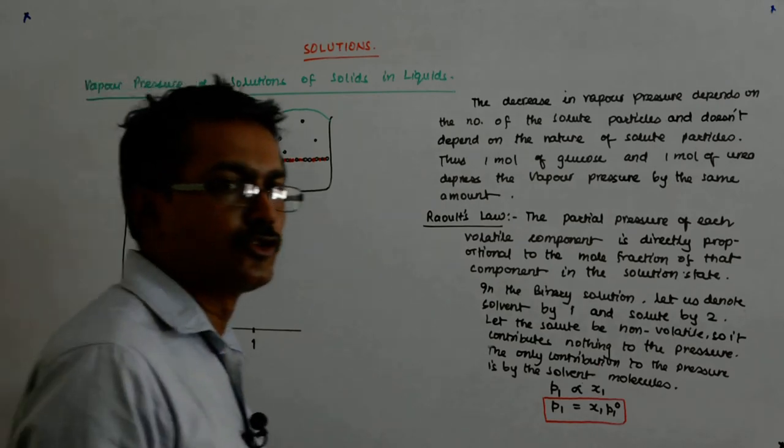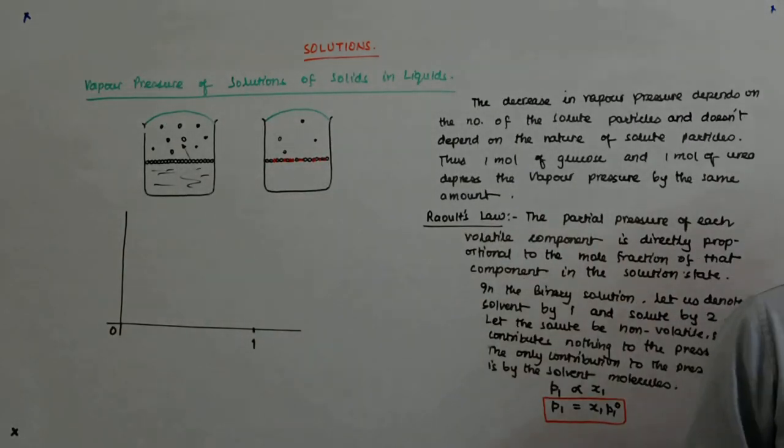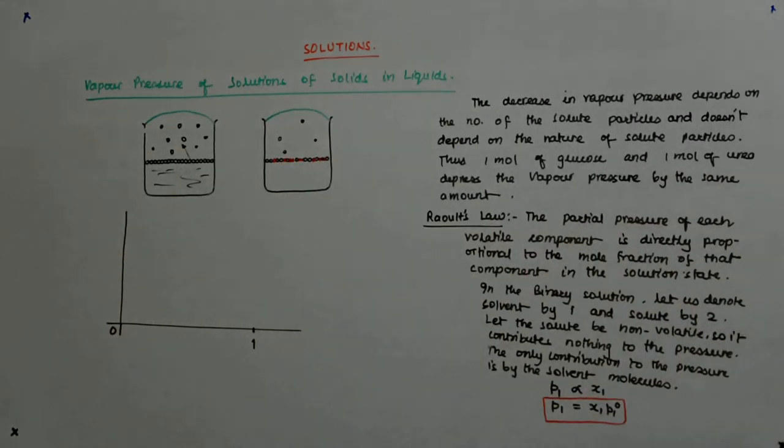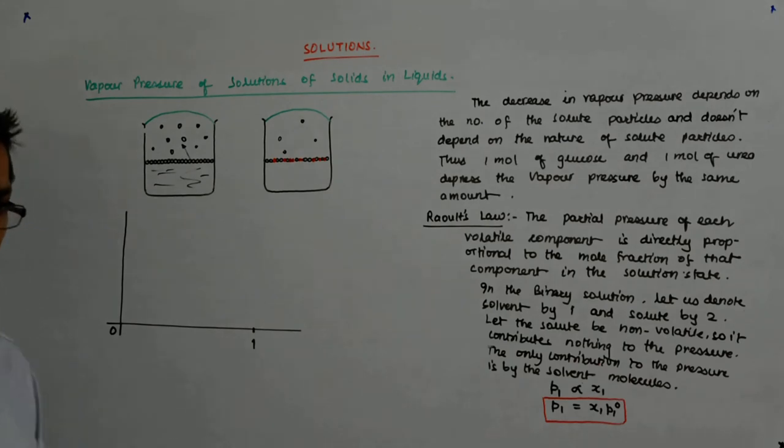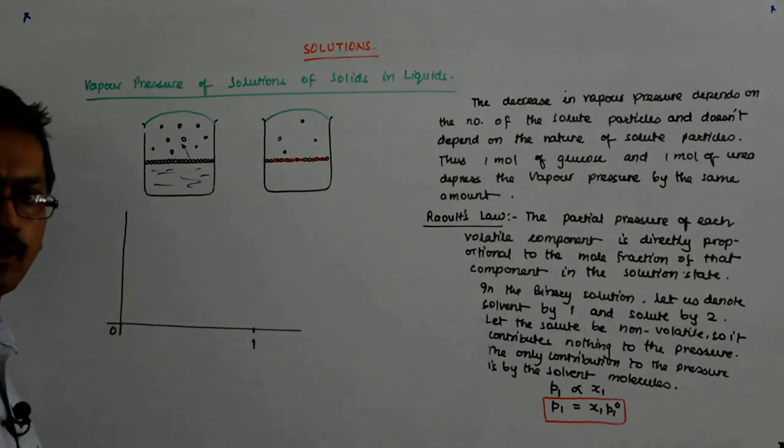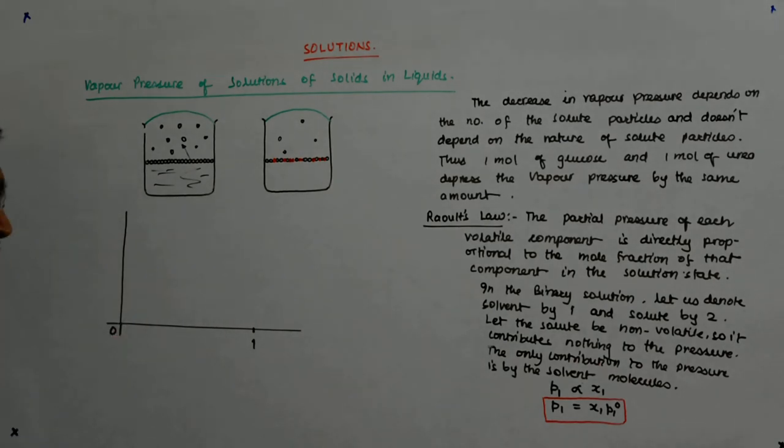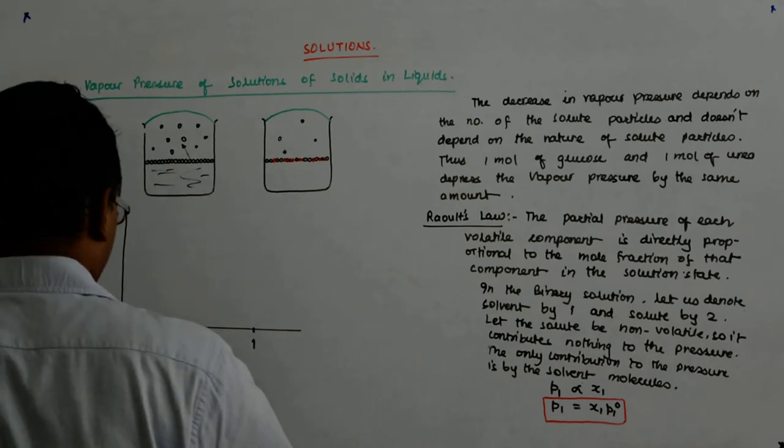Now what happens if there is no solvent and you have only put solute? What happens? Zero. Obviously there will be no pressure. There is no volatile component, so it is just like putting sugar in a bowl and checking the pressure. So the partial pressure will be 0.